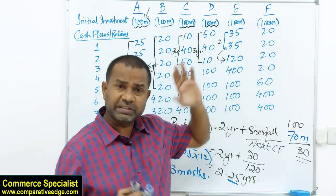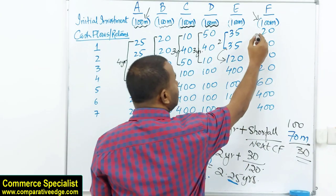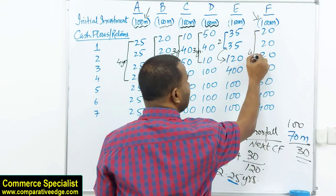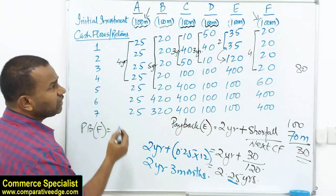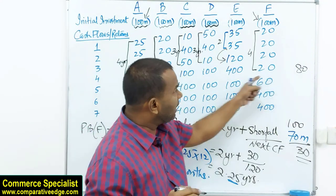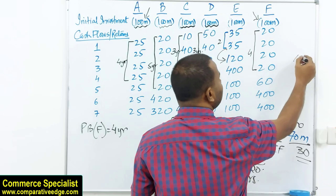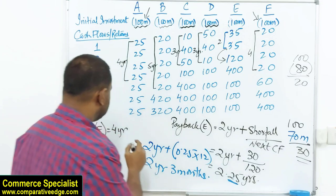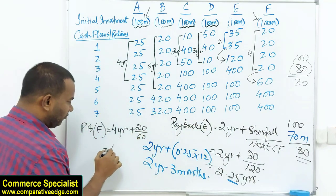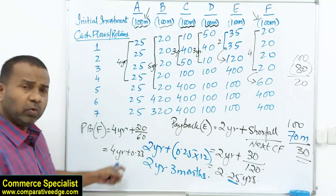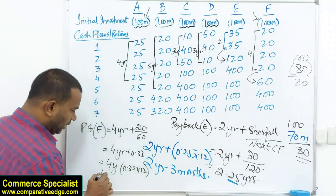For project F, the first four years give 20, 40, 60, 80 — totaling 80 million. The shortfall is 20 million (100 minus 80). So payback is 4 years plus 20 divided by 60, giving 4.33 years. Multiplying 0.33 by 12 gives 4 years and 4 months.